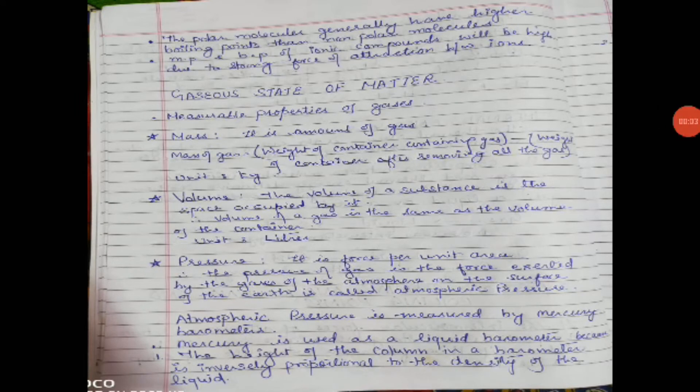Now we will start the gaseous state of matter. There are some measurable properties of gases: we can measure the mass, volume, and pressure of a gas. Mass is the amount of gas; we can measure it by weighing the container with the gas, then subtracting the weight of the container after removing the gas. The unit of mass is kg and we can find the number of moles from it by dividing mass in grams by the molar mass of the gas.